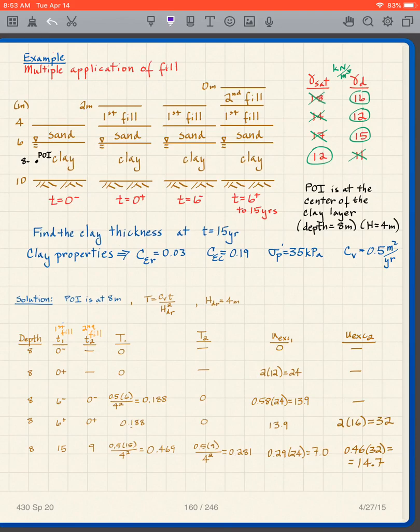This is an example of the situation where here we have clay with sand at t equals zero minus. Then at t equals zero plus we apply two meters of what we're calling a first fill and that's going to remain for six years. So we have the same figure at t equals six minus, then at six years we put on another two meters of another fill and we leave it there for fifteen years.